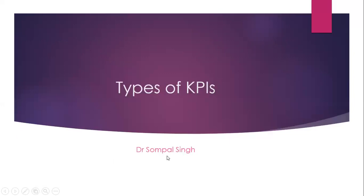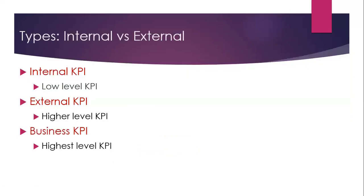Next, types of KPI. One approach is internal versus external. Internal KPI is a low-level KPI — a Key Performance Indicator for an individual, for a section, or for a function of an organization. External KPI is a higher-level KPI compared to internal KPI. And the topmost level is business KPI — performance indicators for the entire business.